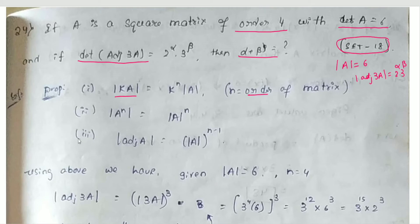The third property is: determinant of adjoint of A equals determinant of A, whole to the power n minus 1.